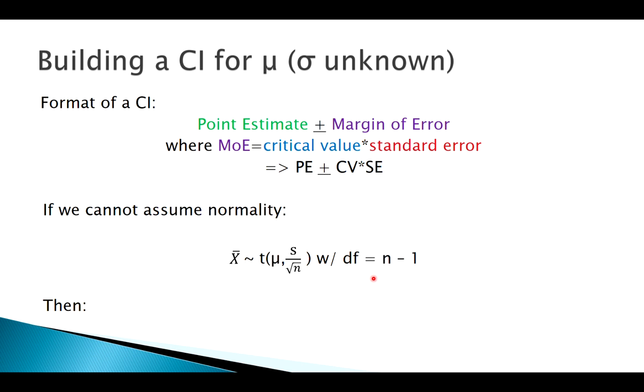All right, so rather than building a z-confidence interval, we'll build a t-confidence interval. So that looks a lot like the formula we saw before. Differences: s instead of sigma, we've got a t-critical value instead of a z-critical value.